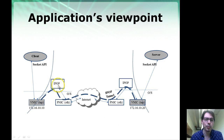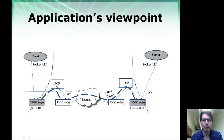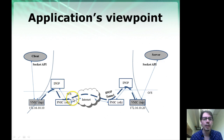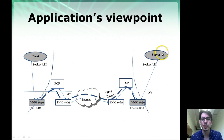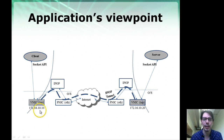IPOP itself is a program running on both of these endpoints that takes packets out of the network interface, encapsulates, encrypts, and forwards them through tunnels over the internet. That goes through the physical network via a physical network interface like an Ethernet card or a Wi-Fi interface, travels through the internet, and reaches the other destination. IPOP does all the packet handling needed to make this whole process transparent to the client and server, so it looks like they're communicating as if they were part of the same local area network.